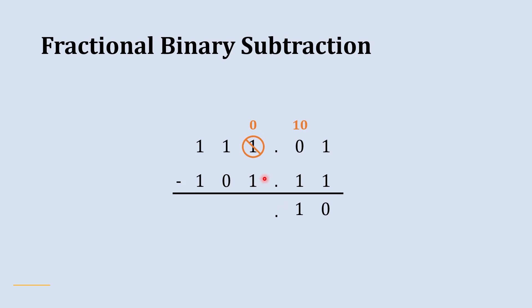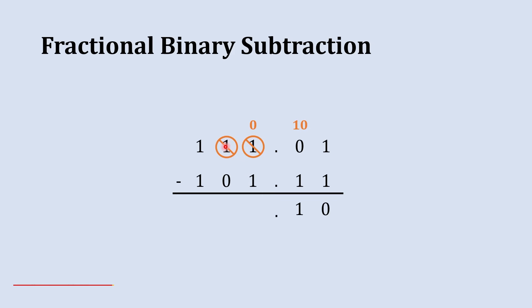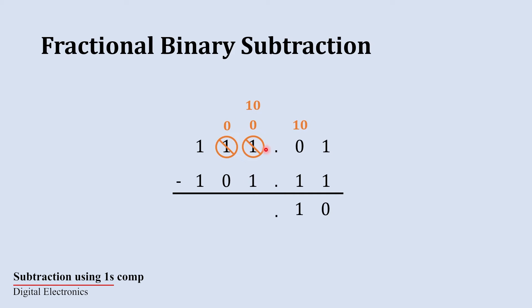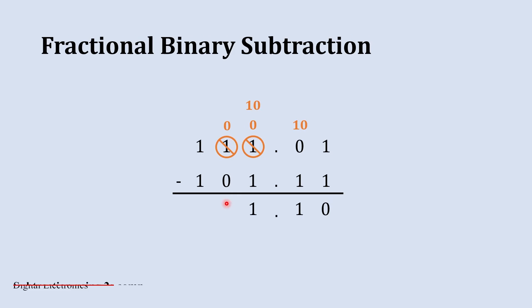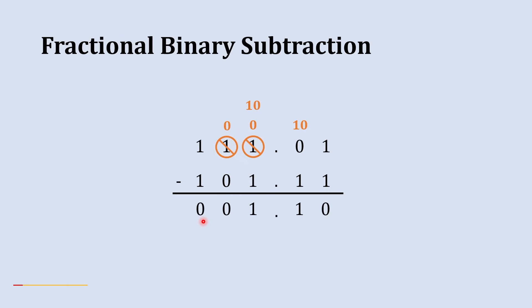In the next column we try to subtract 1 from 1 0 — wait, the current value is 0 and we need to subtract 1, so it is not possible again. We take borrow from the next column: it becomes 1 0 here and 0 is left there. Subtracting 1 from 1 0 gives 1, then 0 minus 0 gives 0, and 1 minus 1 gives 1. That completes the second example.